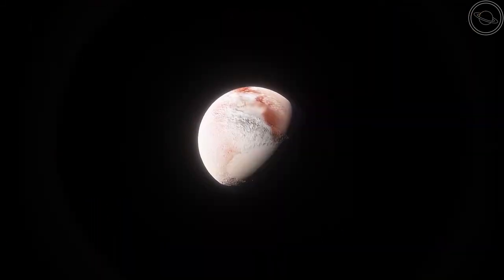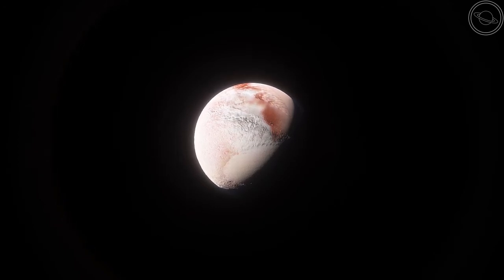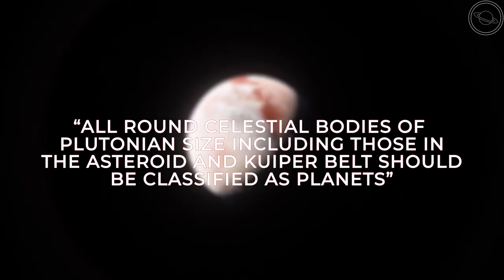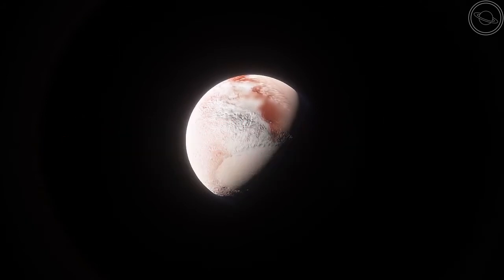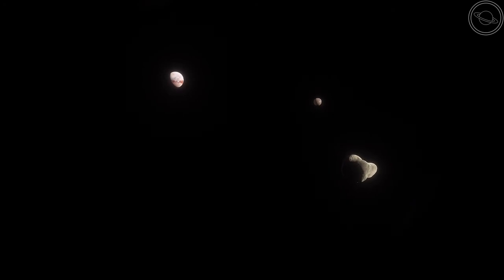A different definition proposed by NASA engineer Alan Stern, who worked on the New Horizons project at Pluto, proposed that all round celestial bodies of Plutonian size, including those within the asteroid and Kuiper Belt, should count as planets. While this seems like a more viable definition for a planet, it is unlikely that the IAU will revisit this topic to avoid further controversy.